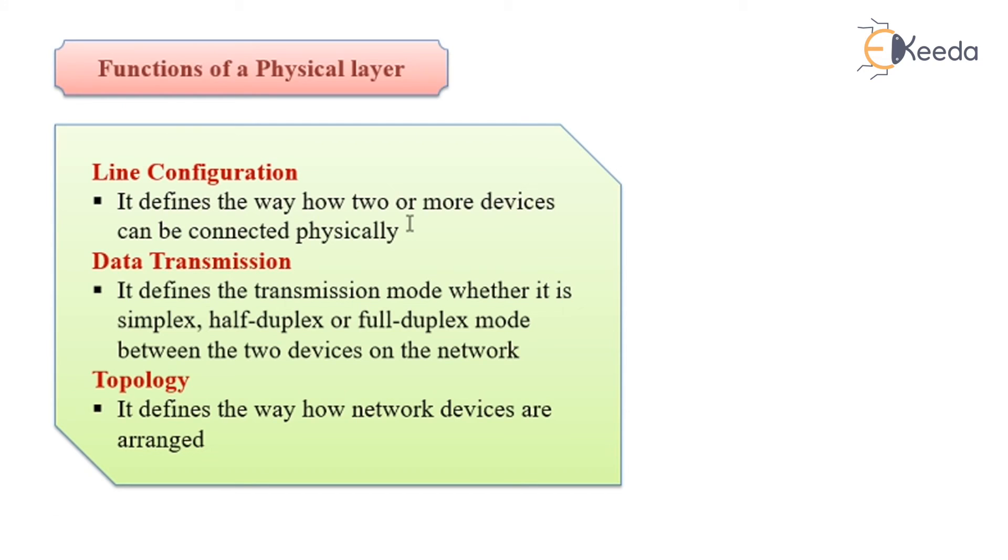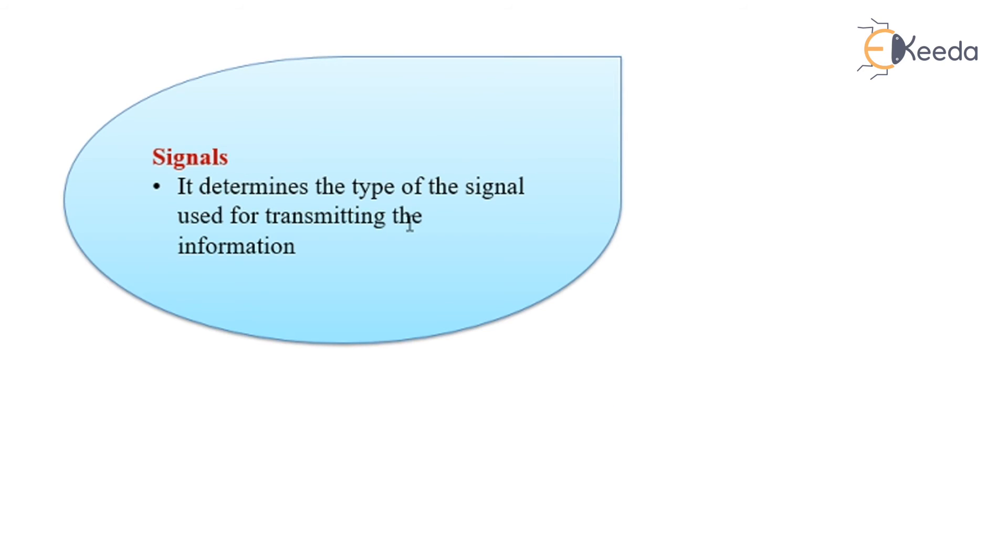Moving to the functions of the physical layer. Line configuration defines the way how two or more devices can be connected physically. Data transmission defines the transmission mode whether it can be simplex, half-duplex, or full-duplex. Topology defines how the network devices are arranged. Signals determine the type of signal used for transmitting the information. That is all about the seven layers of the OSI model. Thank you.